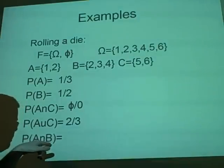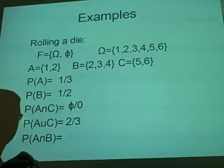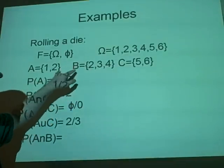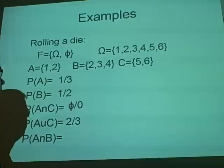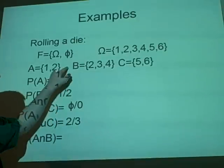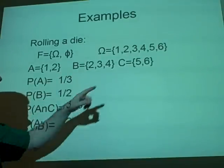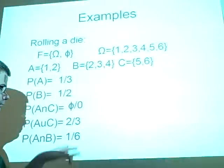Probability of A and B. Let's have a look. So, here we have 2 is in both, so that's one element in both of these. And there's 6 elements altogether, so the probability is a sixth.